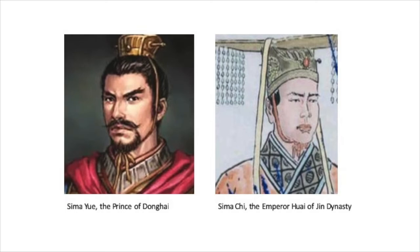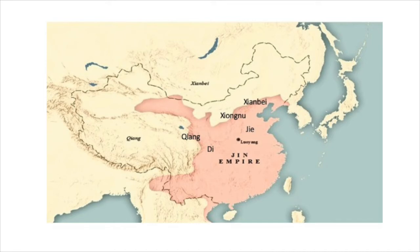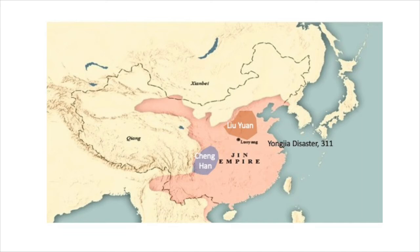After the Prince of Donghai defeated the other princes, he murdered Emperor Hui and acclaimed Emperor Hui's younger brother as the new emperor, known as Emperor Huai. At this point, the Jin Dynasty was already in deep trouble. Barbarian leaders had gained power during the civil war and began to rebel against the Jin Dynasty. There were mainly five ethnicities among those barbarians: Xiongnu, Xianbei, Jie, Di, and Qiang. In 304, when the civil war was still going on, a group of Di people rebelled in the Sichuan Basin and established a barbarian kingdom named Cheng Han, marking the beginning of the Sixteen Kingdoms period.